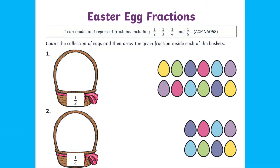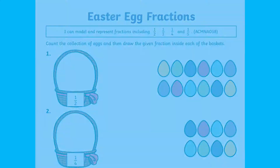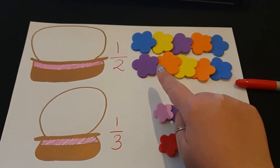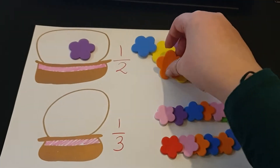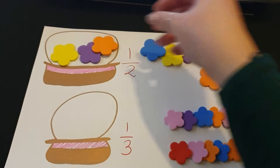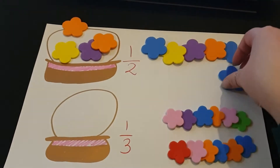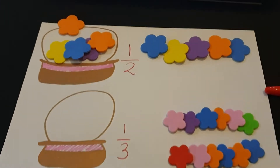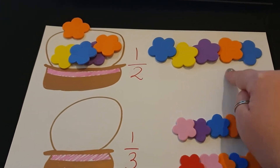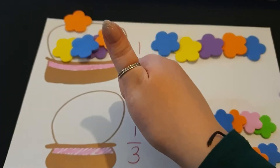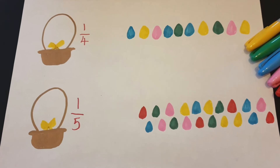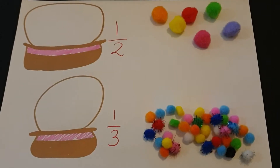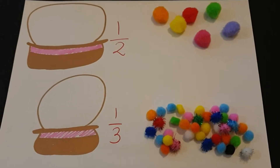Take a look at this egg fraction activity. You can print it or make your own and do it with things from around your home. It's quite simple — count the eggs and find the fraction of that number. If you're making your own, you can make it as challenging as your child needs.